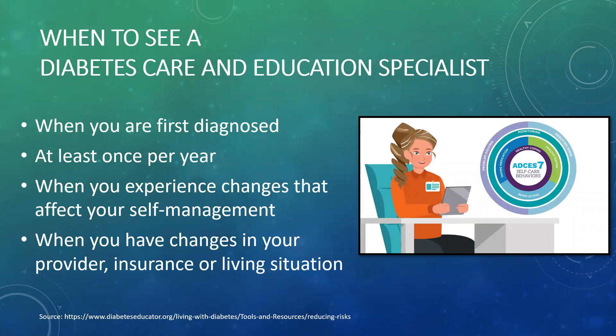The first is when you're first diagnosed — understanding all the impact that diet, medications, and activity can have on a person with diabetes. It's also good to see them once per year, which aligns with our standards of care. When we look at these four opportunities, they're all part of our standards of care: when you're first diagnosed, at least once a year, any changes that may affect your self-management, or if you've had changes in your provider, your insurance, or your living situation.